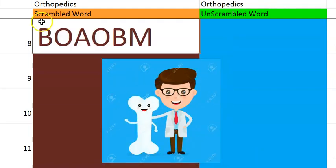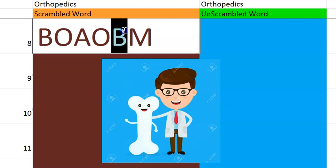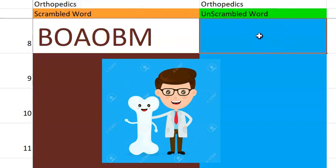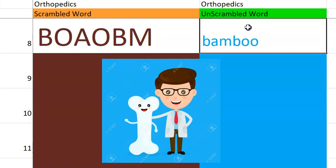Let's go to the eighth one. Are you having fun? What do you think this is? This is actually a condition, but also it can be used by quacks for treatment as a splint. This is a wood. It is bamboo. There's a condition called bamboo spine — it's a radiographic feature seen in ankylosing spondylitis. There will be vertebral body fusion by marginal syndesmophytes.